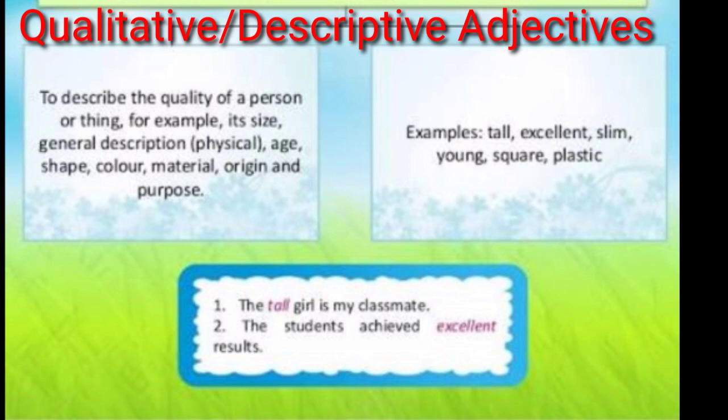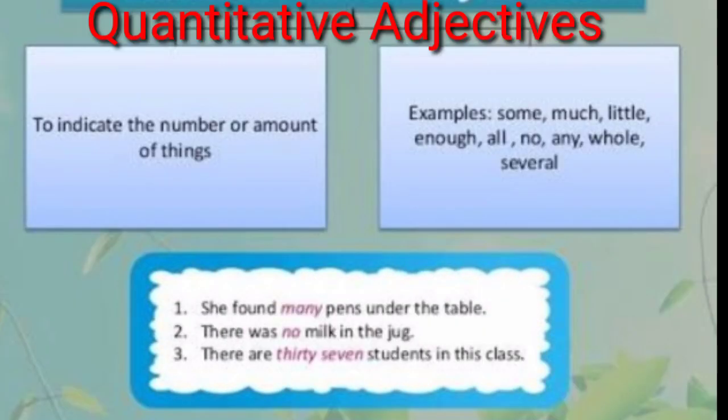For example: 'The tall girl is my classmate.' How is the girl? The girl is tall — so here 'tall' is the descriptive adjective. Now, quantitative adjectives indicate the number or amount of things, like a type of person, place, animal, or birds. For example: some, much, little, enough, all, no, any, whole, several.